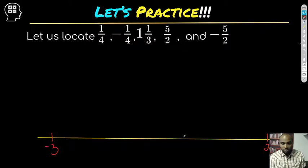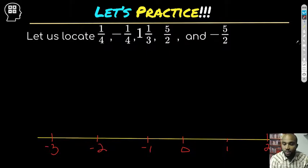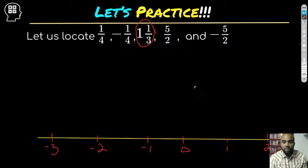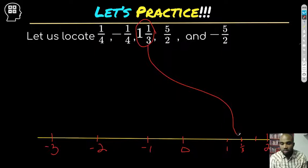So zero should be somewhere over here. There's one, negative one, negative two. Start with the low hanging fruit — one and one third is probably the easiest. Here's my one, and we know it's going to be a little bit more than that. I'll break this into thirds: one third, two thirds, three thirds. So this is my first one third — and there it is.